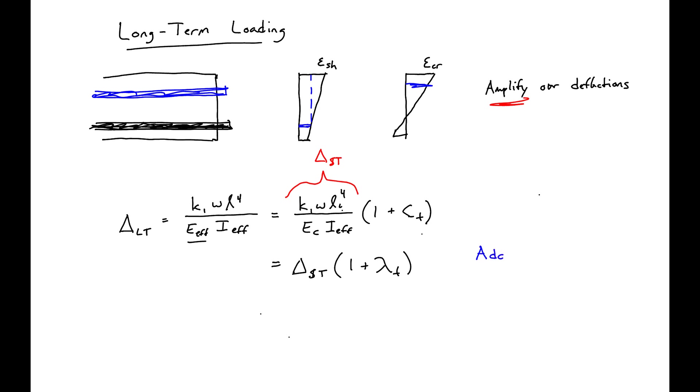Adding any kind of compression steel will decrease our time effects, and we can see this in the expression for lambda.